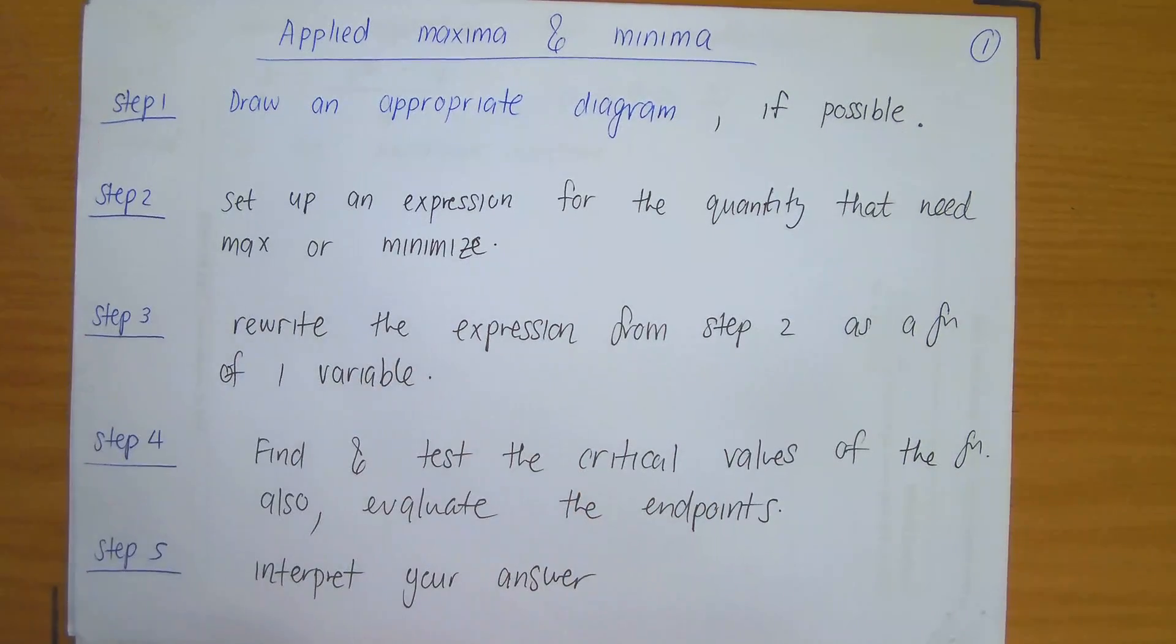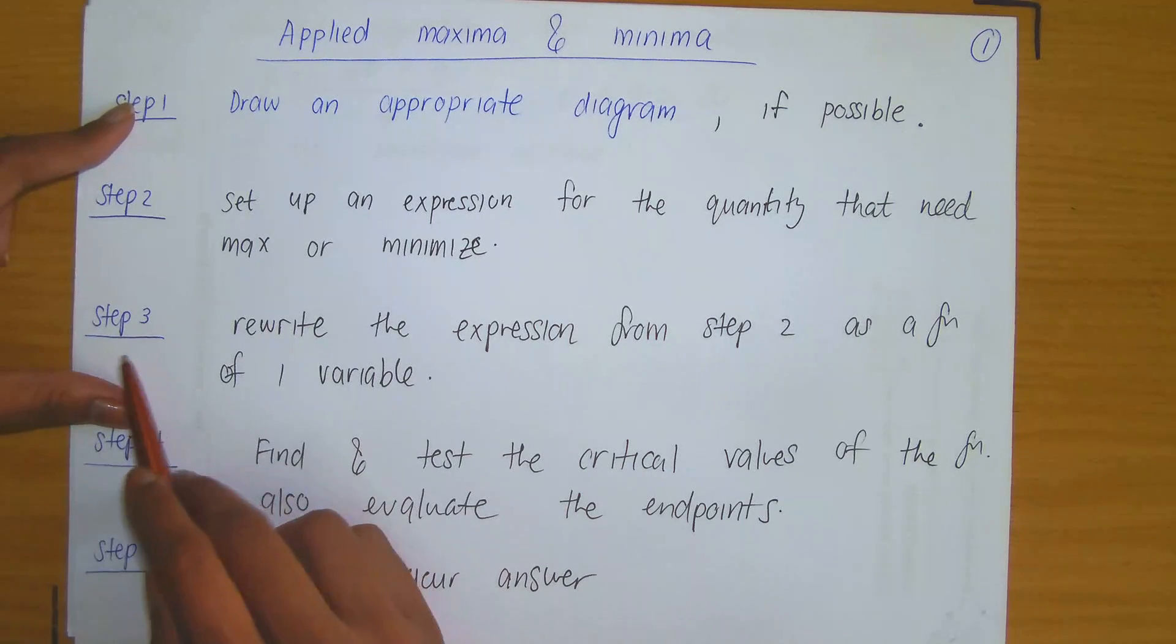So step two, set up an expression for the quantity that you need to maximize or minimize. So if you're maximizing profit, you need to set up the expression for the profit function.